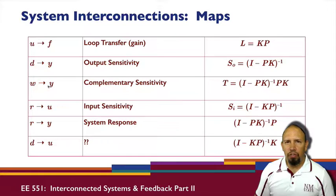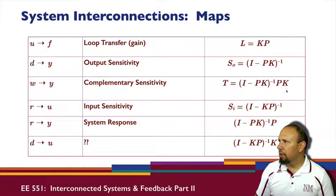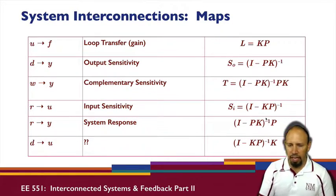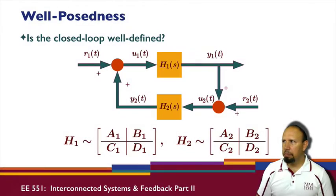The transfer function from W to Y is called the complementary sensitivity function, and it's given by this. I also have the input sensitivity function, which is very similar to the output sensitivity function, but notice it's just the opposite order of multiplication here. And then our system response is given by this expression. So these are some various maps from various inputs to various outputs. Some of these actually have names.